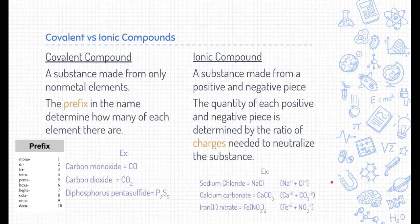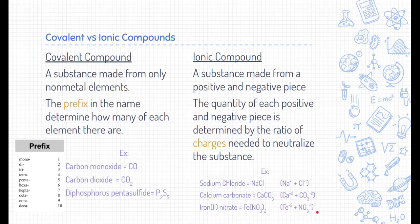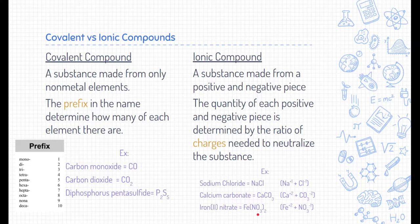Our third example does not have a ratio of one to one: iron(II) nitrate. The Roman numeral II represents iron's charge, so this iron has a positive two charge. Nitrate, another polyatomic ion from our list, is NO3 with a charge of minus one. These charges are not equal, so we need to determine the ratio of each to cancel each other out. Iron being a positive two charge, we only need one — Fe. Nitrate being a minus one charge, we would need two nitrates to neutralize that one iron. So the formula for iron(II) nitrate is Fe(NO3)2 — two nitrates attached to one iron.